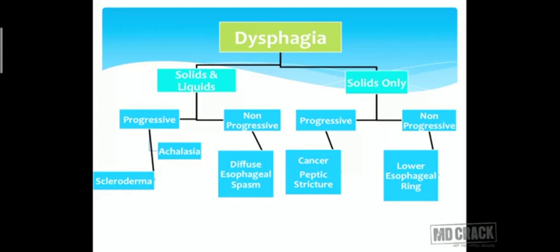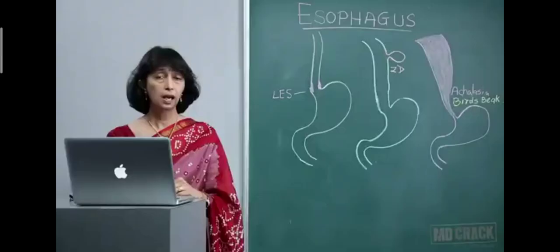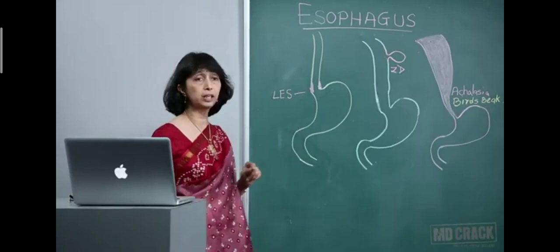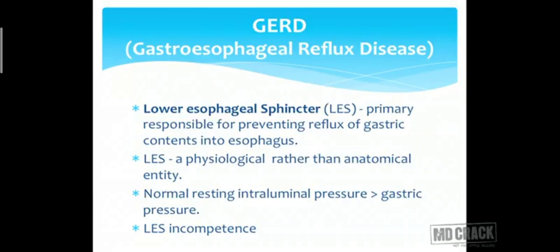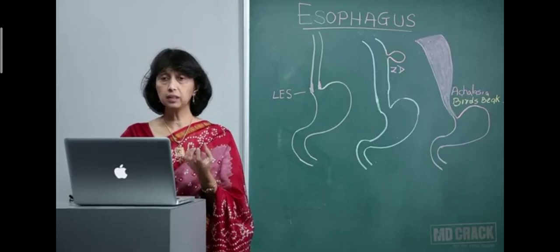The first disorder is GERD, or gastroesophageal reflux disease. As you can see in this diagram, there is a lower esophageal sphincter at the junction of the lower esophagus and the stomach, responsible for preventing reflux of gastric juice back into the esophagus. This is a physiological rather than anatomical entity. Normally the lumen pressure in the esophagus is more than the stomach, so whenever this sphincter is incompetent, you get reflux.